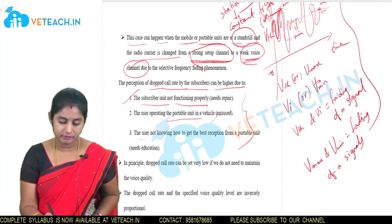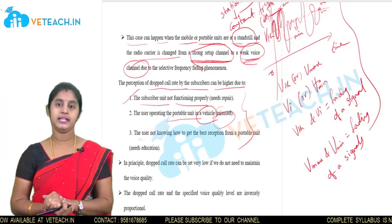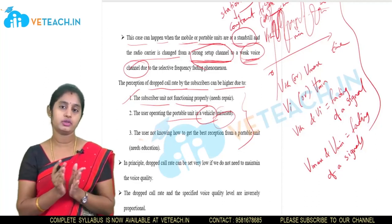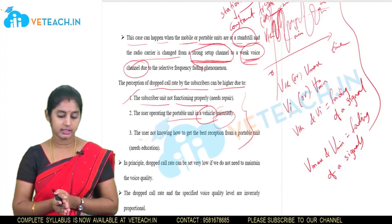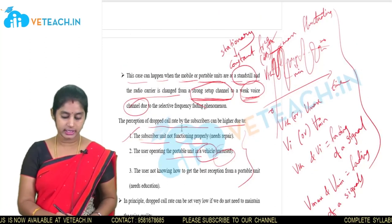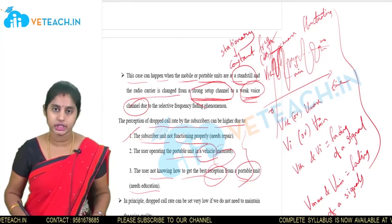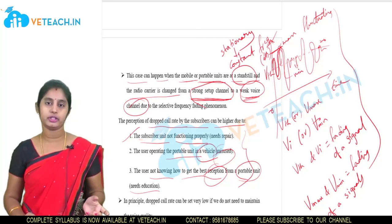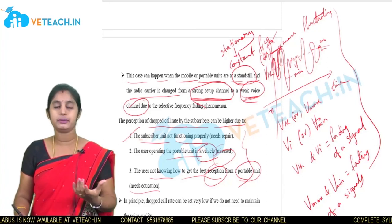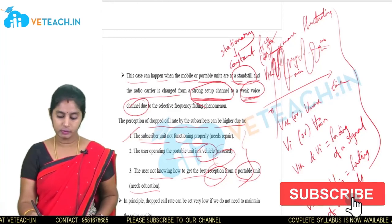Second, the user operating the portable unit in a vehicle — the device moves from one zone to another, causing misuse of frequencies and occurrence of dropped calls. Third, the user not knowing how to get the best reception from a portable unit — without proper knowledge or education on using communication devices, dropped call rates can also increase.